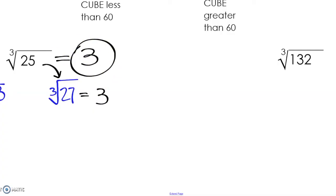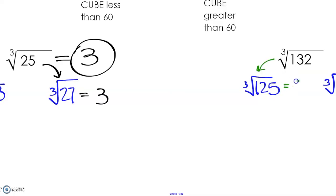The cube root of 132. The closest perfect cube to 132 is going to be the cube root of 125. And on the greater end, the closest perfect cube that is greater than 132 is going to be the cube root of 216. Since 132 is closest to 125 and the cube root of 125 is 5, we can estimate the value of the cube root of 132 to be approximately 5 to the nearest integer.